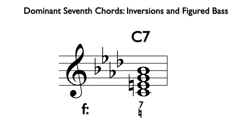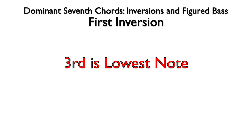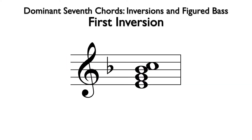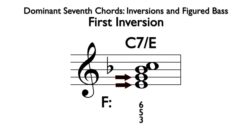Next, we will voice this chord in first inversion. As we learned with triads, the first inversion chord simply has the third as its lowest note. Here we are still using the C7 chord, V7 in the key of F, but now E is the lowest note. The chord symbol for this chord is C7/E, with C7 indicating the chord and E indicating the lowest note. Figure-based symbols indicate the intervals above the lowest note: from E to C is a sixth, E to Bb is a fifth, and E to G is a third. So the longhand figure is 6-5-3, typically abbreviated to 6-5.